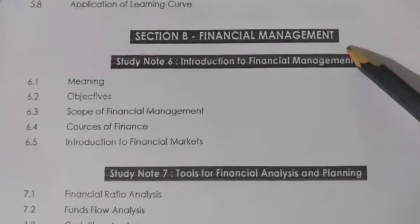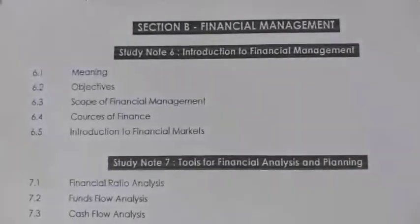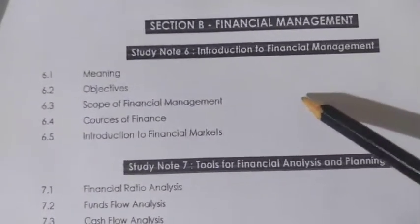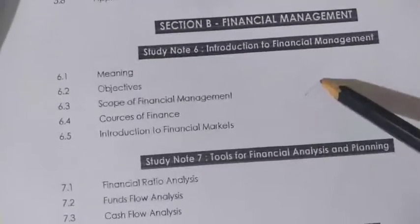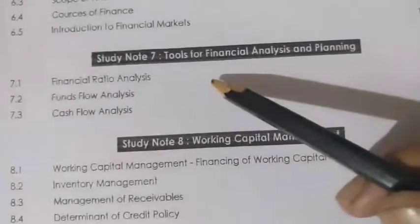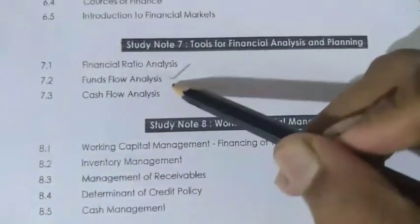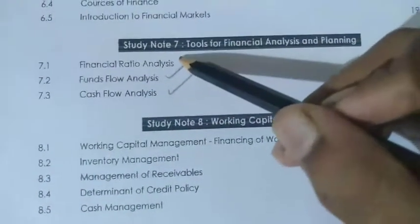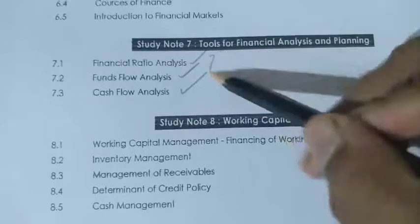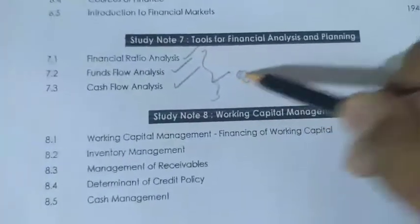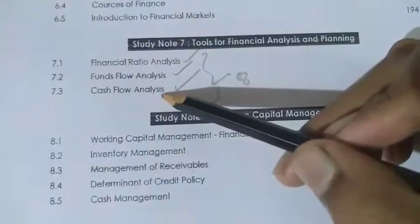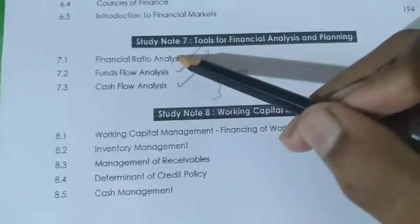Section B covers Financial Management. The first chapter of Section B is Chapter 5 — Financial Management. Study Note 7 covers Fund Flow and Cash Flow, that is Ratio Analysis, Fund Flow, and Cash Flow. This is very important — these are key questions in our exam.